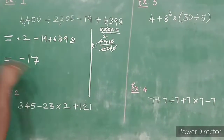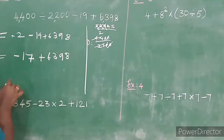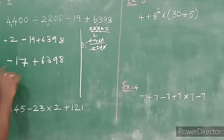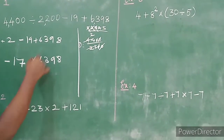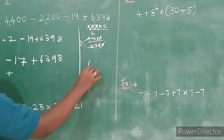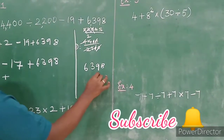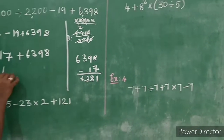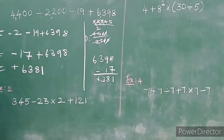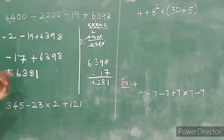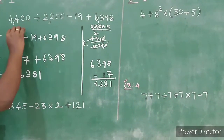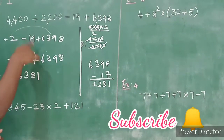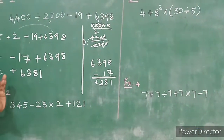Then minus 17 plus 6398. Signs are different, so subtract and put the bigger integer's sign. 6398 minus 17: 8 minus 7 is 1, 9 minus 1 is 8, 3 minus 0 is 3, 6 minus 0 is 6 — so 6381. Be careful: you can do addition first provided you then subtract correctly.